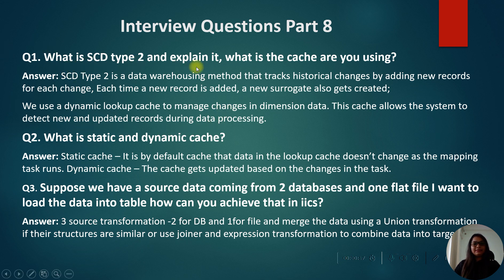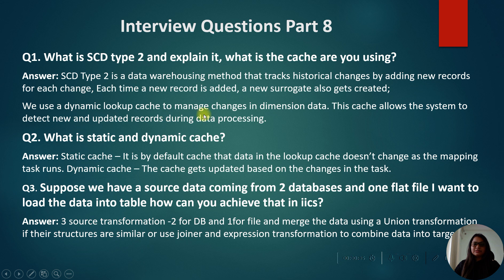What is SCD Type 2 and explain it, and what cache are you using? SCD Type 2 is a data warehousing method that tracks historical changes by adding a new record for each change. Each time a new record is added, a new surrogate key is also created. We use the dynamic lookup cache to manage the changes in dimension data, which allows the system to detect new and updated records during data processing.